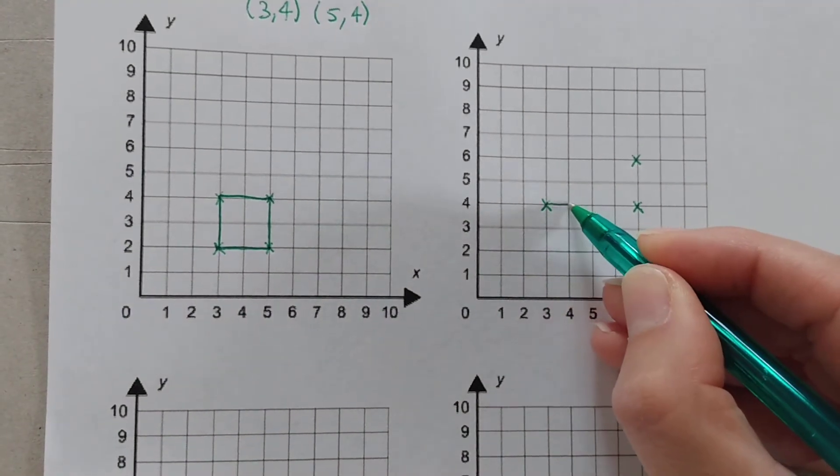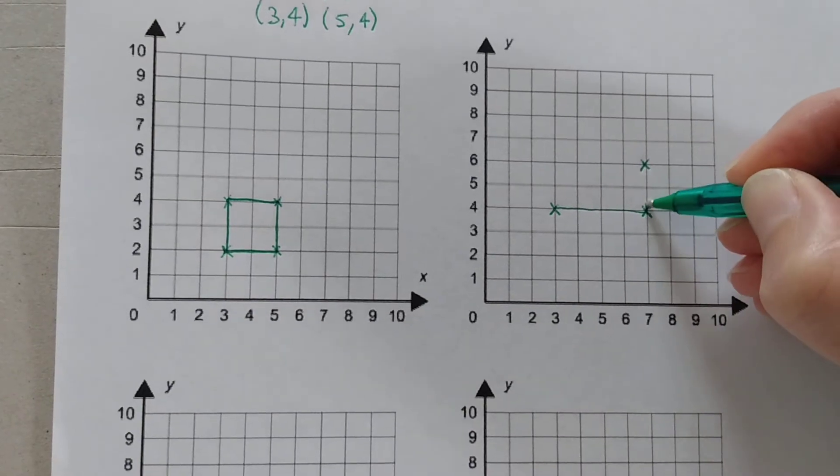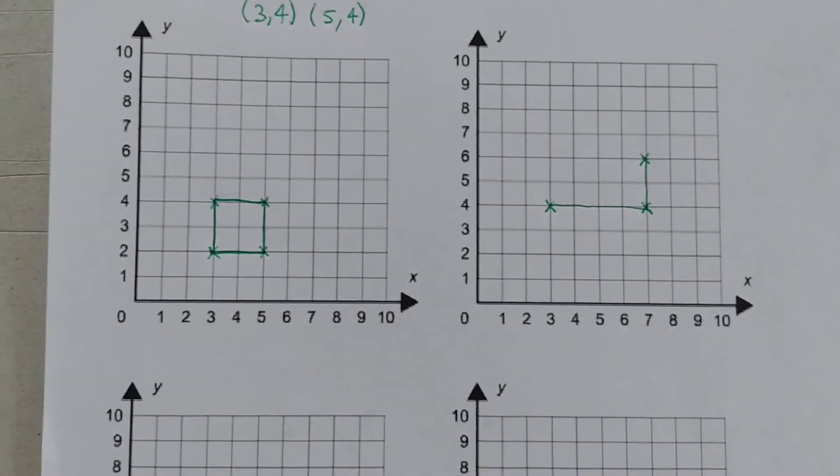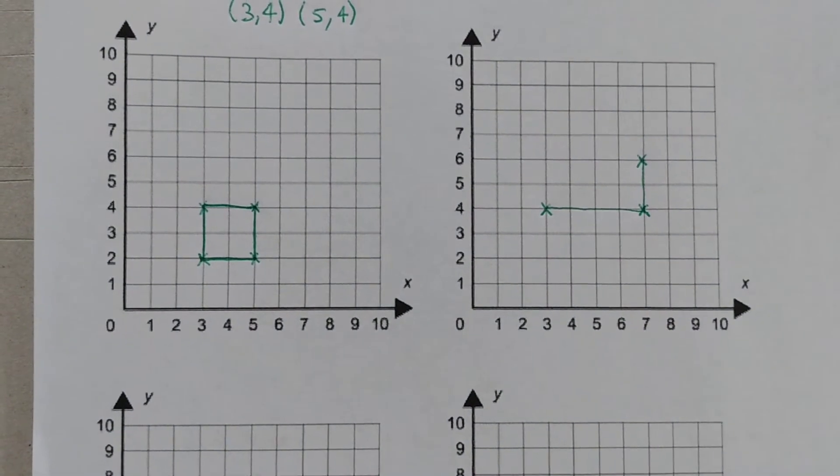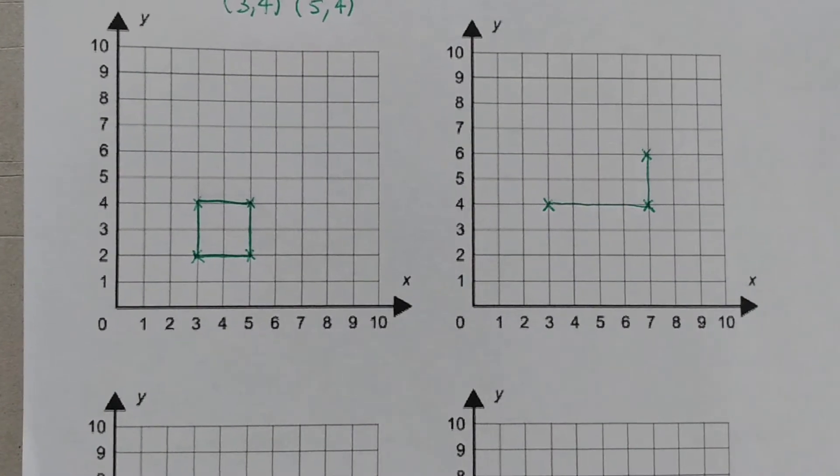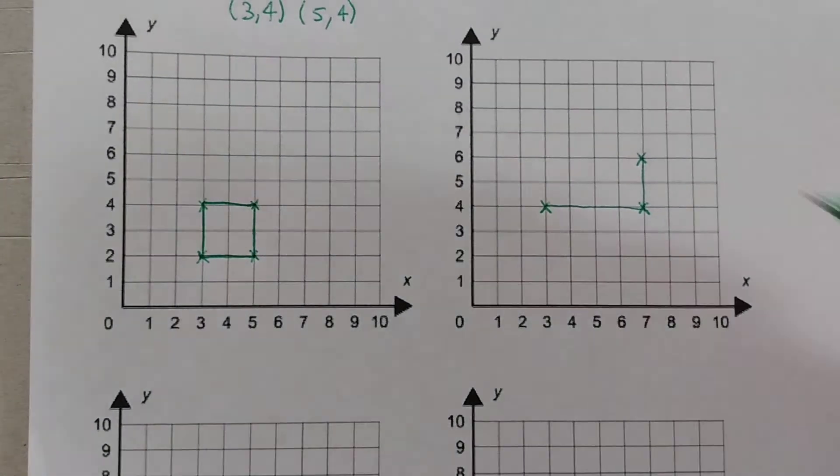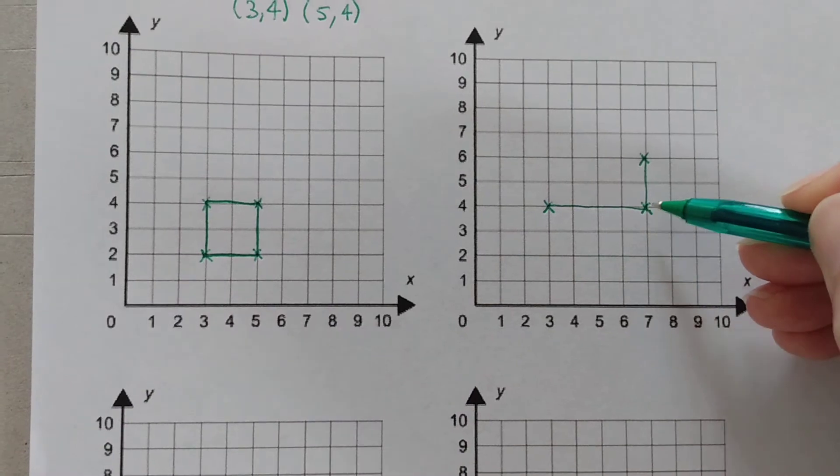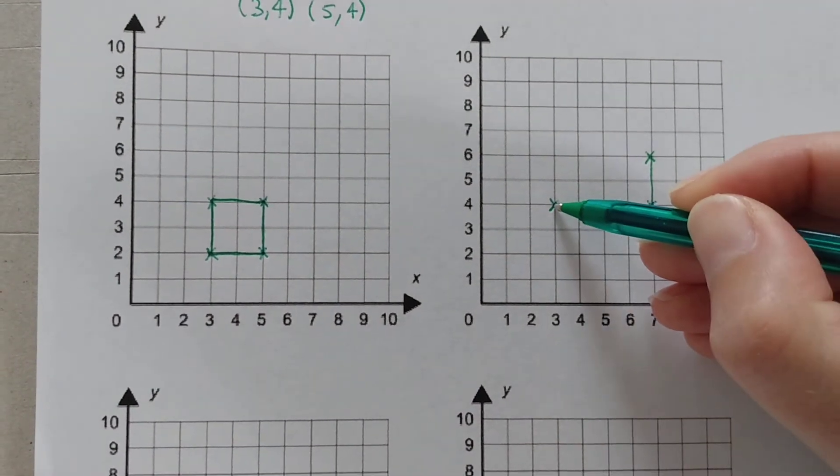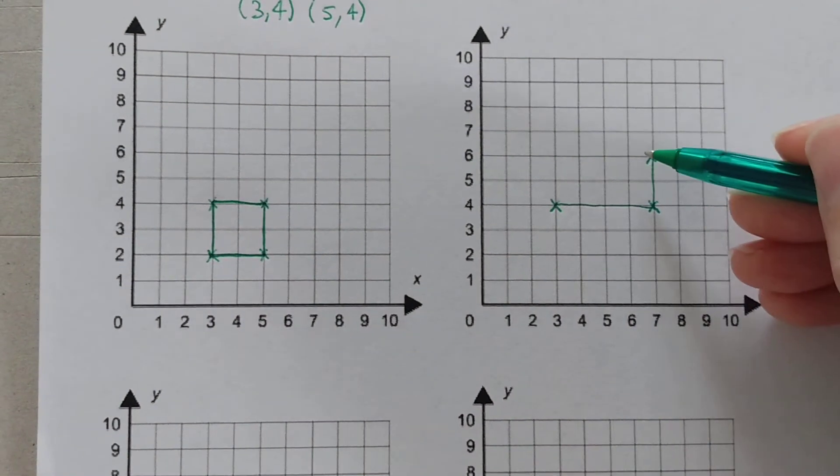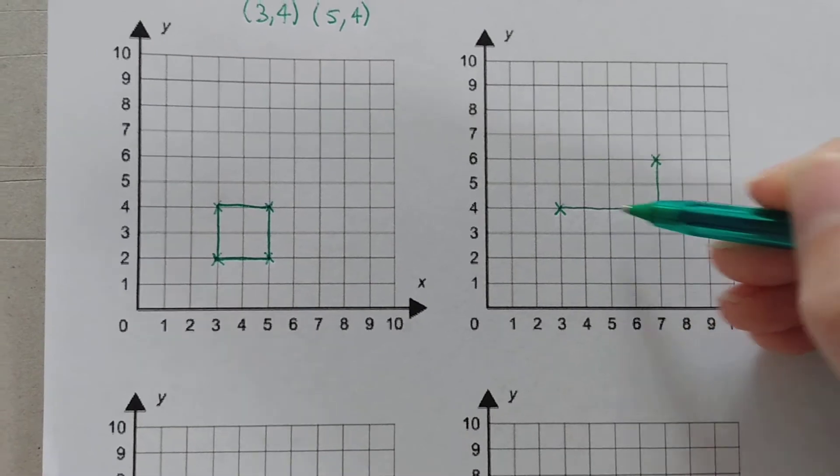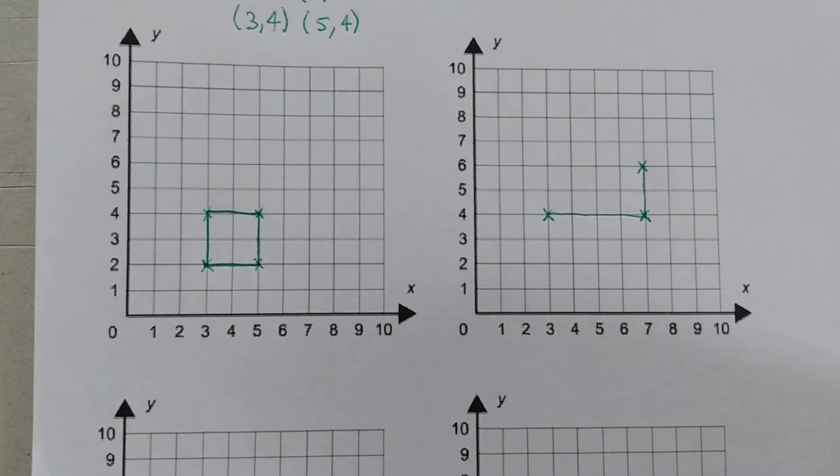Right. So we can join the coordinate points that we do have, but we are looking to make a rectangle. We know the properties of a rectangle are two short sides and two long sides. The short sides must be equal and parallel and the long sides must be equal and parallel.